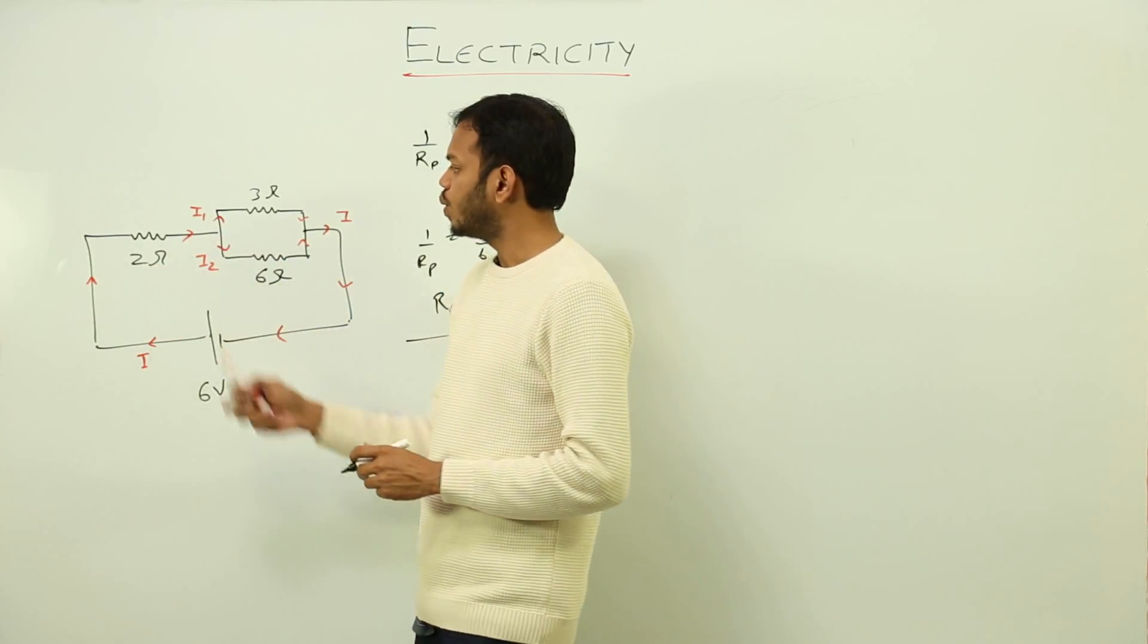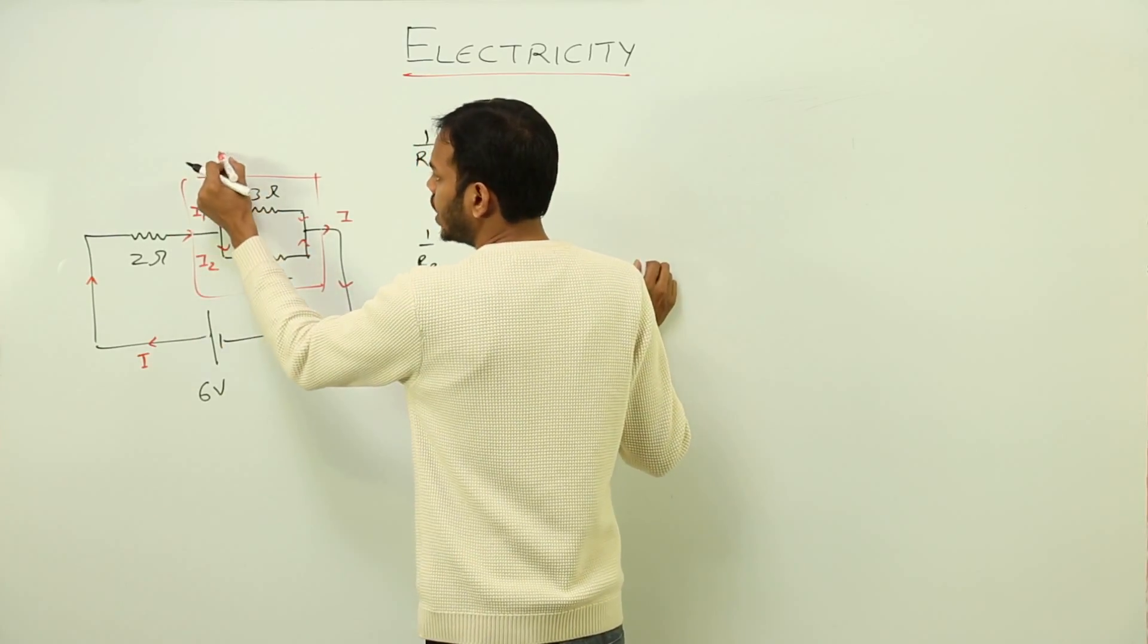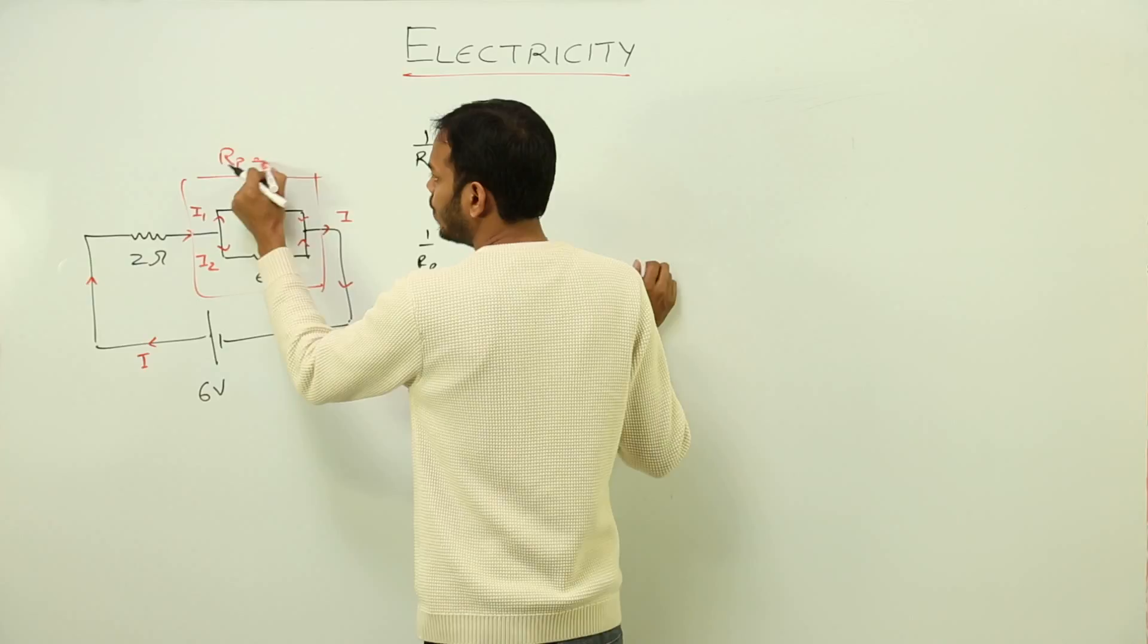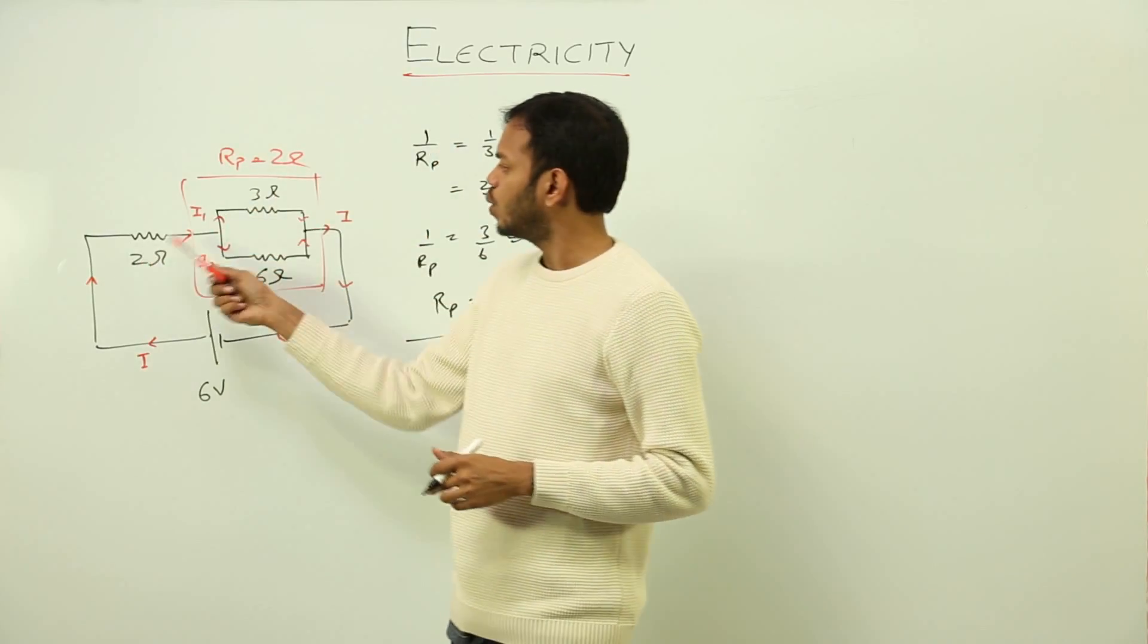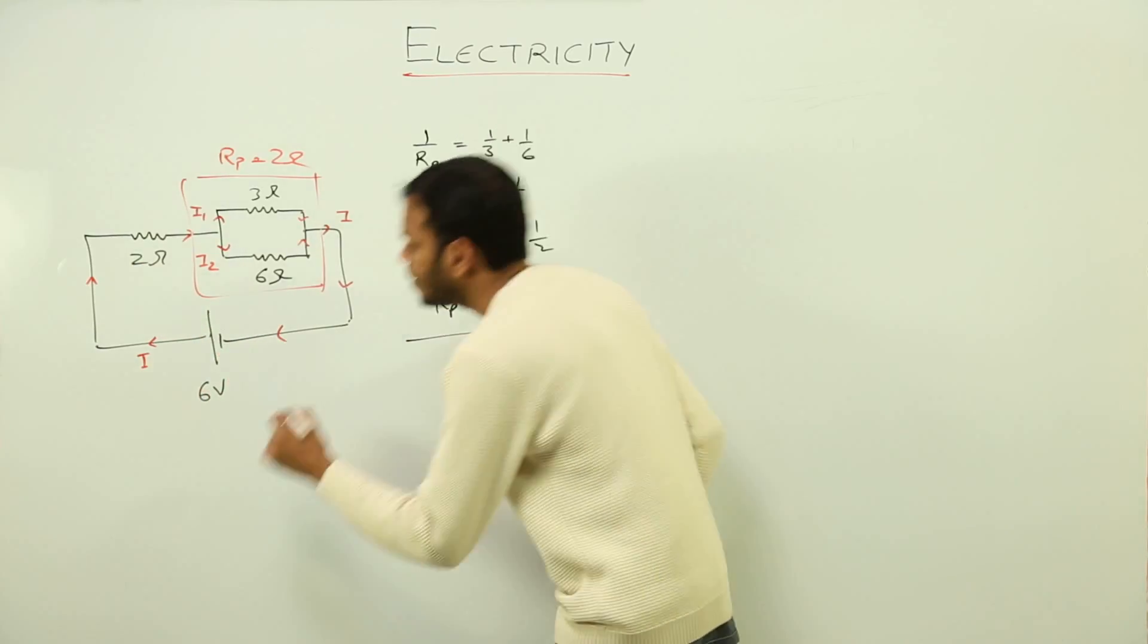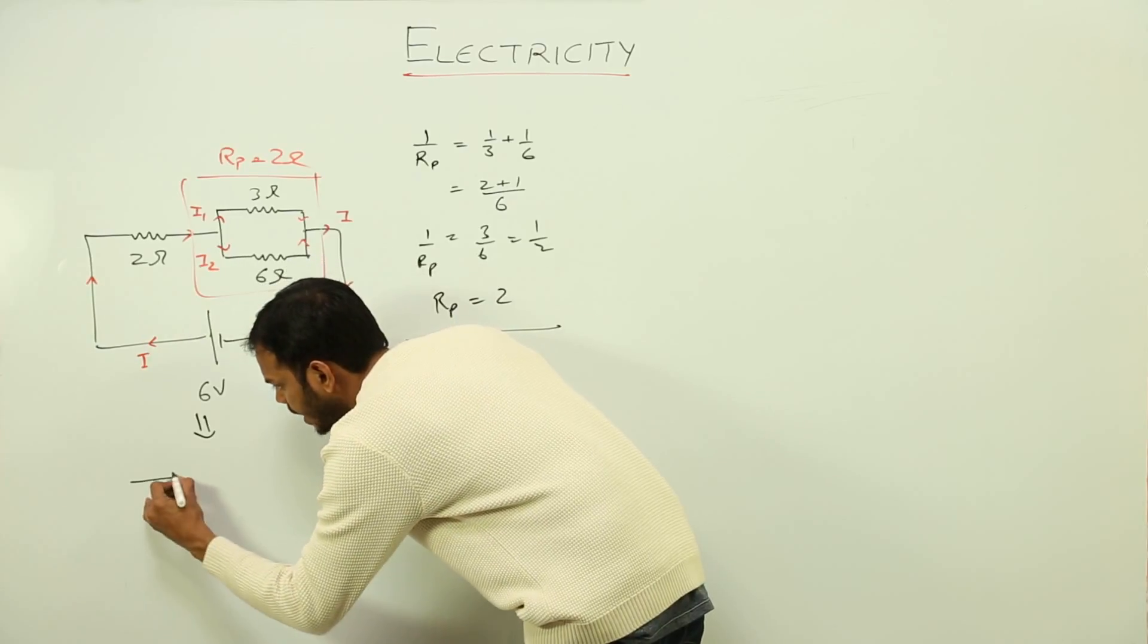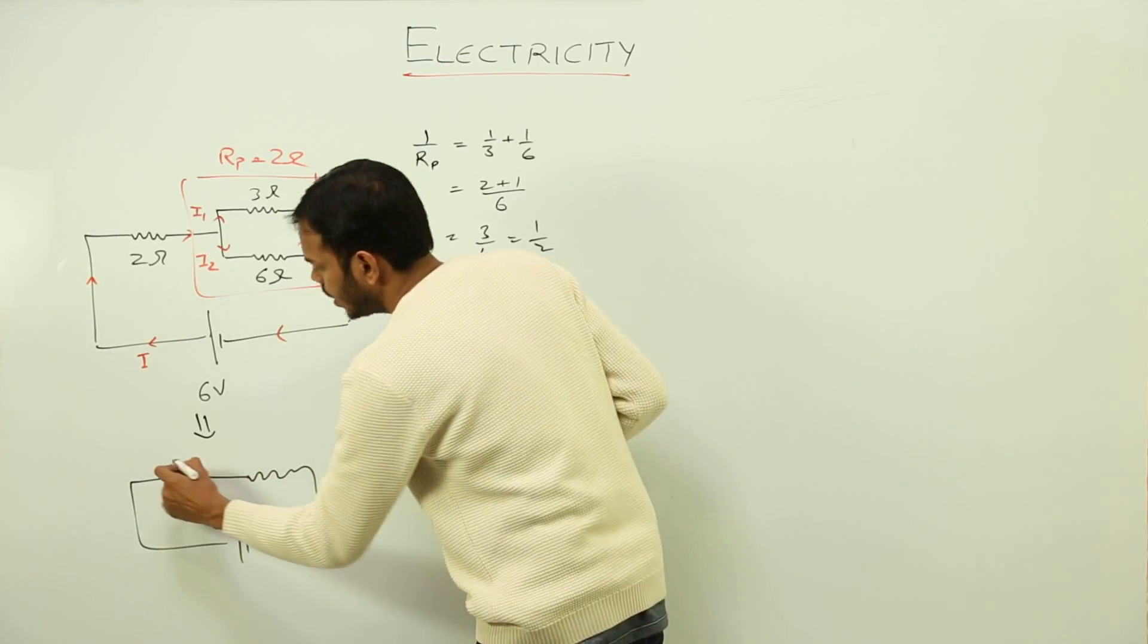So that gives me, you know, you got my point, that this whole resistance in parallel is equal to 2 ohms. So this 2 and this 2, the combination and this 2 are in series. Now, if you are still not getting my point, this circuit can be redrawn like this: 2, 2, and 6.